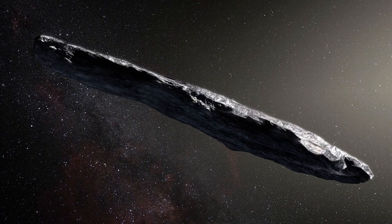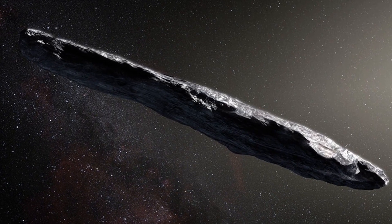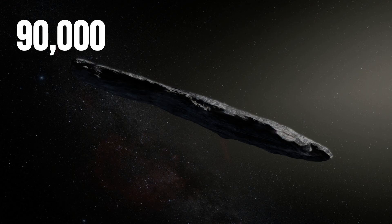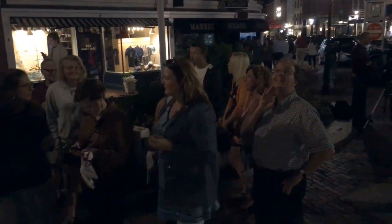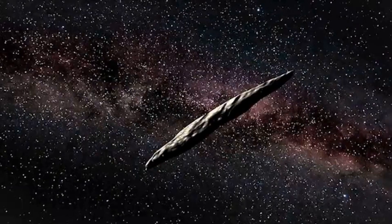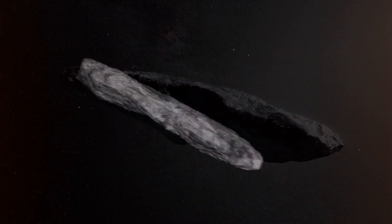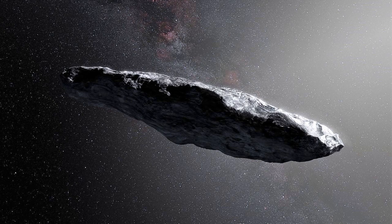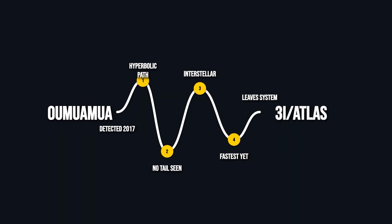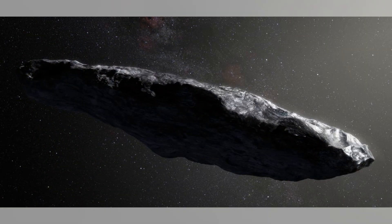Oumuamua arrived first, back in 2017. A needle-shaped object from another star system, tumbling through the inner solar system at nearly 90,000 kilometers per hour. It left astronomers puzzled. No coma, no dust, no gas. Despite every telescope pointed its way, Oumuamua stayed stubbornly quiet, reflecting sunlight with a reddish hue but never growing a tail. Its trajectory was hyperbolic, like 3I/Atlas, but its behavior was more like a bare rock than any comet. Some called it an asteroid, others wondered if it was something else entirely.